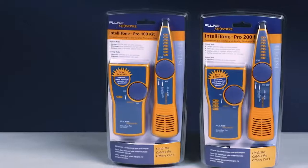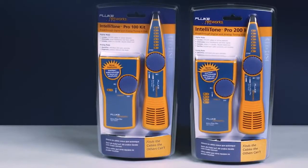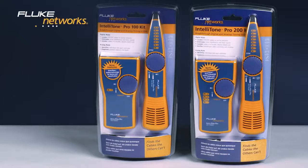Find cables the others can't. Get the IntelliTone Pro from Fluke Networks. There are two different models to choose from. The IntelliTone Pro 100, designed for single-line telco applications, and the 200, used for two-line applications, and includes a jack on the probe for wire mapping.